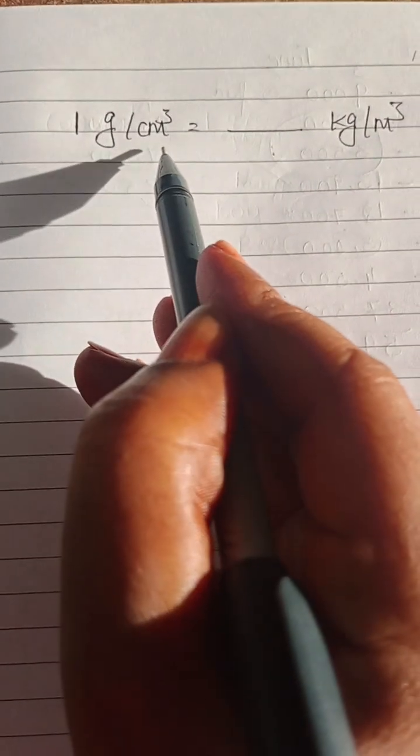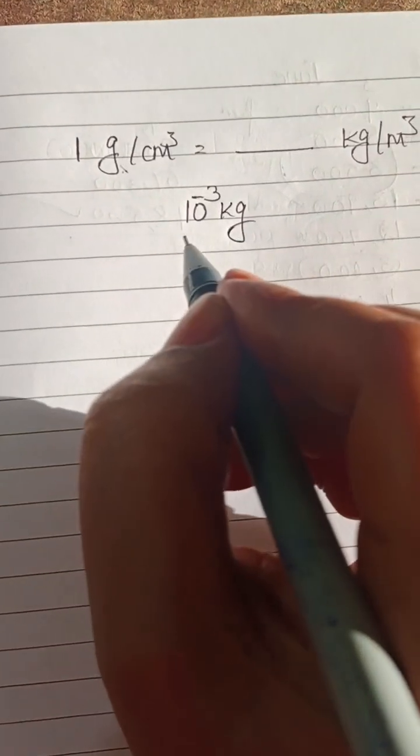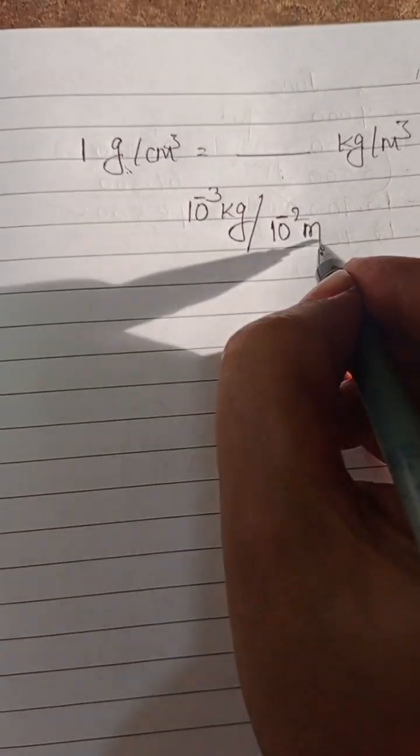1 gram per centimeter cube equals to dash kg per meter cube. 1 gram equals to 10 power minus 3 kg. 1 centimeter equals to 10 power minus 2 meter.